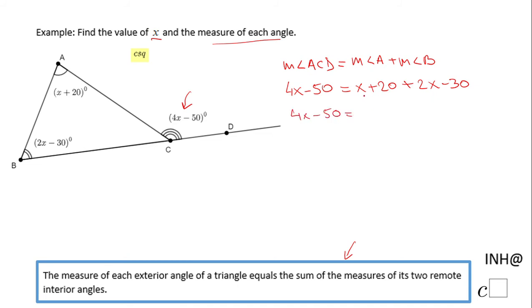On the right side we need to combine the like terms. 2x and x, that will be 3x. 20 and minus 30, that will be minus 10. And then we're going to subtract 3x.